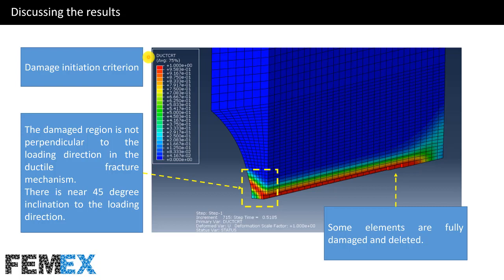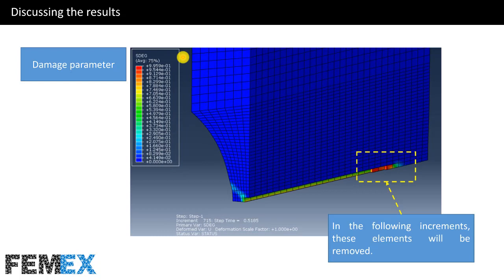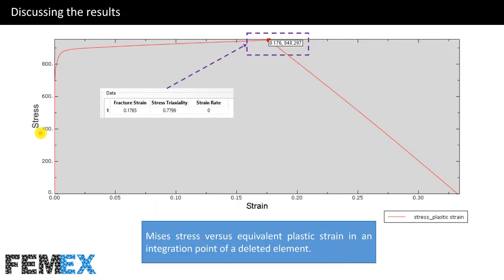This is the contour of damage initiation criterion. As you can see, the damaged region is not perpendicular to the loading direction in the ductile fracture mechanism. There is a near 45-degree inclination to the loading direction. This is the loading direction and this is the damaged region — not perpendicular to the loading direction — with a 45-degree inclination. Some elements are fully damaged and deleted during the simulation. This is the contour of damage parameter, and these elements are damaged, and this region is not perpendicular to the loading direction.